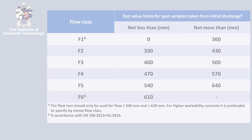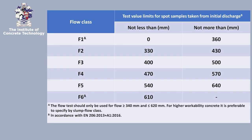The Flow Table Test is used to measure the consistence of concrete and is suitable for concrete having flow values of between 340 mm and 620 mm. The flow of a concrete is usually specified by a flow class, as shown in this table.